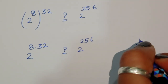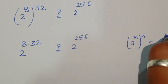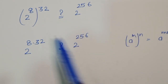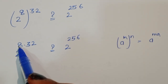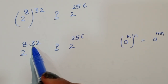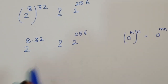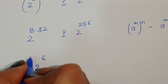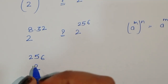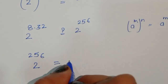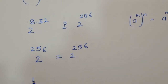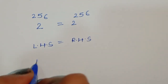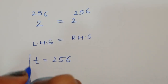Using the formula: if a power m power n is given, we can write a power m times n. So 2 power 8 times 32. Multiplying: 8 times 32 is 256. So we get 2 power 256 is equal to 2 power 256. Therefore LHS is equal to RHS, hence it is proved. So the value of t is equal to 256.